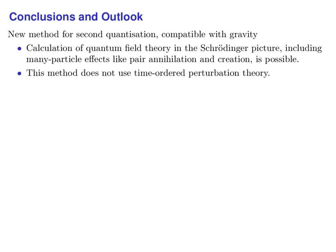This answers the initial question: when we reimplement quantum field theory in the Schrödinger picture and solve its many-particle Schrödinger equation numerically, how far can we get before it becomes necessary to break compatibility with the spin connection? The answer is: we can implement the full quantum electrodynamics, including pair annihilation and creation, without breaking compatibility with the spin connection and thus with general relativity. Instead of finding out why we cannot quantize gravity, I found a new method for second quantization which does not use time-ordered perturbation theory and which is compatible with gravity.